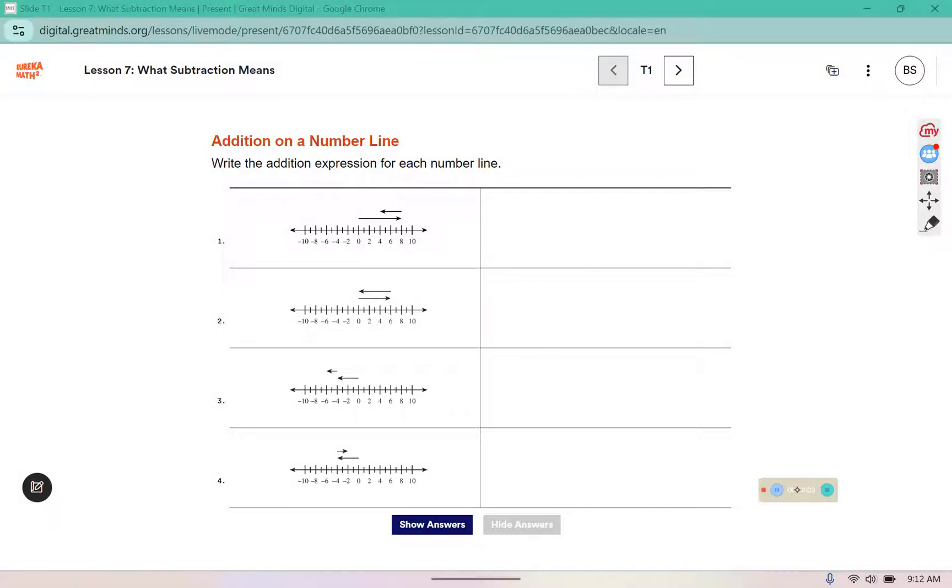Write the addition expression for each number line. What it's looking for is the first one says negative four, or sorry, the last one says negative four because it's going to the left four, plus positive two because it moves to the right two spots. You do not need the answer, you are just writing the expression. If it wanted the answer as well, it would say the number sentence.